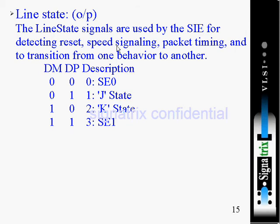Line state signals are used by the serial interface engine for detecting reset, speed signaling, packet timing, and to transition from one behavior to another. Line state is a very important signal because it is the exact replica of D plus and D minus. If D plus and D minus are both zero, then single-ended zero is present. Zero-one means J state, one-zero means K state, and one-one means single-ended one. Your function device controller comes to know what is on the line by reading this line state signal.